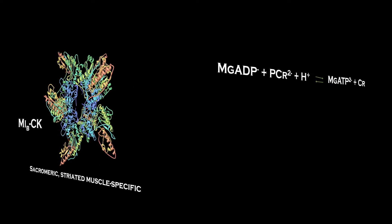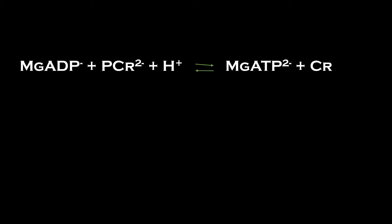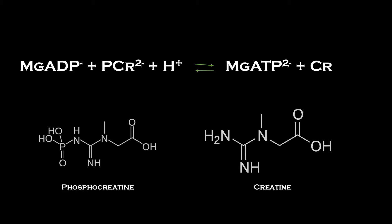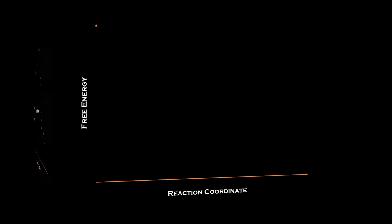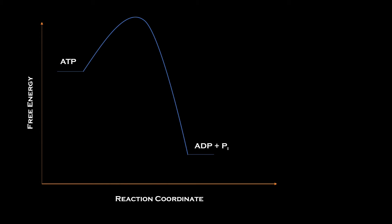All creatine kinase enzymes, including mitochondrial creatine kinase, catalyze the reversible reaction of ADP and phosphocreatine to ATP and creatine, thereby phosphorylating ADP to regenerate ATP. This reaction functions effectively because phosphocreatine is a high-energy compound due to the positioning of its phosphate group. The free energy of hydrolyzing this phosphate group is negative 43.1 kilojoules per mole. Hydrolysis of the gamma phosphate of ATP is negative 30.5 kilojoules per mole. Therefore, it is thermodynamically more favorable to hydrolyze phosphocreatine, and this phosphate can then be transferred to ADP to synthesize ATP.